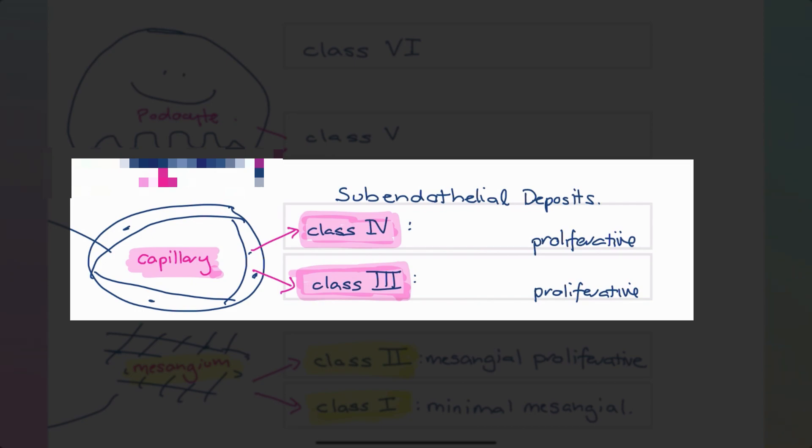So what's the difference between these? The key difference is the extent of involvement. Class three lupus nephritis involves less than 50% of the glomeruli on the biopsy, and because of this it receives the term focal proliferative lupus nephritis, whilst class four involves 50% or more of the glomeruli and receives the title diffuse proliferative lupus nephritis.